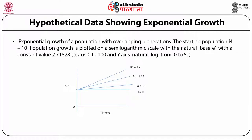Exponential growth of a population with overlapping generations, starting with N = 10. When plotted on a semi-log curve, this gives a straight line with natural log e = 2.71828. The x-axis varies from 0 to 100 and the y-axis (natural log) from 0 to 5. This curve indicates different rates of population growth with different values of r0, ranging from 0 (no growth) to 1.1–1.2 (increasing growth rate).